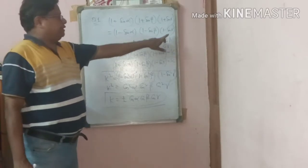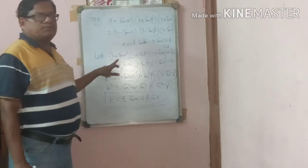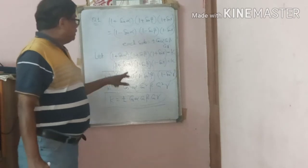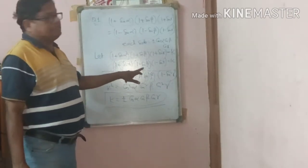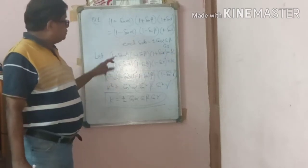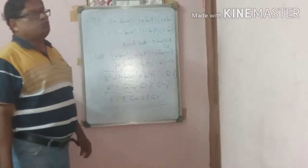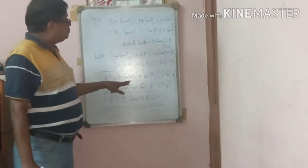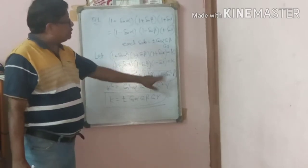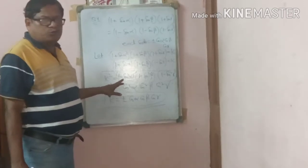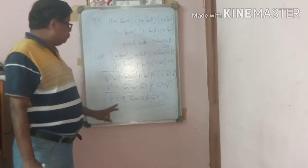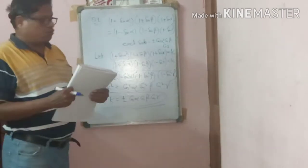To recap: let each ratio be k, that is (1 + sinα)(1 + sinβ)(1 + sinγ) = k and (1 − sinα)(1 − sinβ)(1 − sinγ) = k. Multiply them: k² = (1 + sinα)(1 − sinα)(1 + sinβ)(1 − sinβ)(1 + sinγ)(1 − sinγ) = (1 − sin²α)(1 − sin²β)(1 − sin²γ) = cos²α · cos²β · cos²γ. So k = ±cosα · cosβ · cosγ.